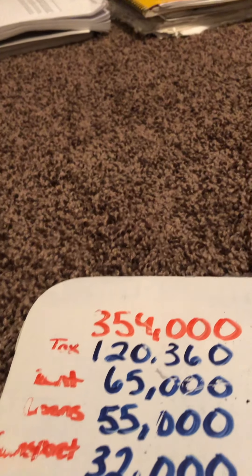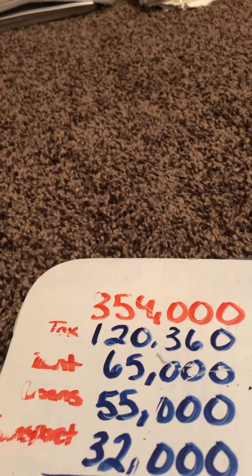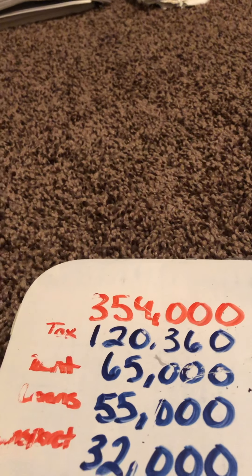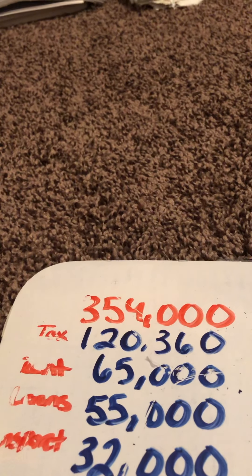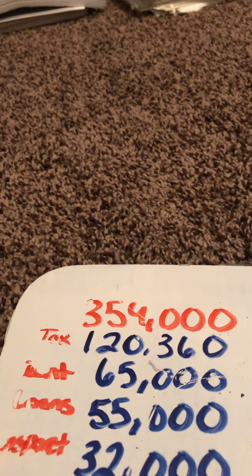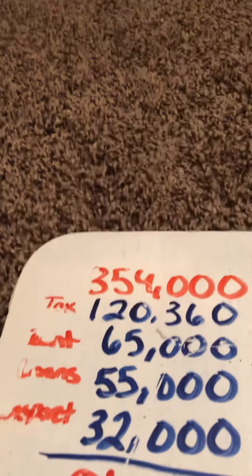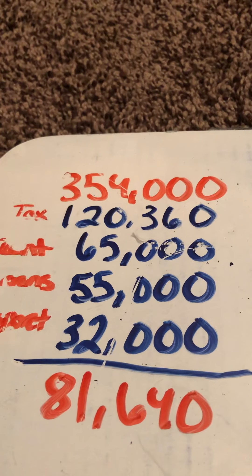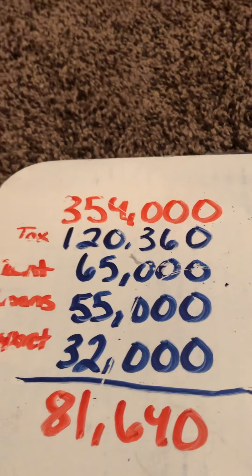Then you also get the cost of transportation to get around, or the cost of travel, or the cost of your lifestyle — $32,000 over the course of five years. That takes that $354,000 they initially brought in and brings it down to $81,640 over the course of five years.